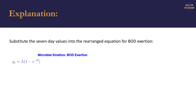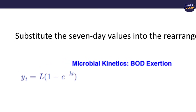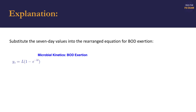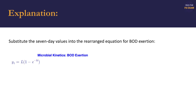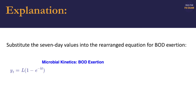We will use the BOD exertion equation shown on the screen for this problem. Y sub t refers to the BOD value relative to a point in time. L refers to the ultimate BOD — this is going to be the variable that we are searching for. Lowercase k refers to our constant in base E, and t refers to our reference point in time.